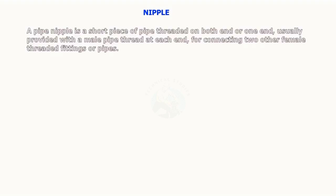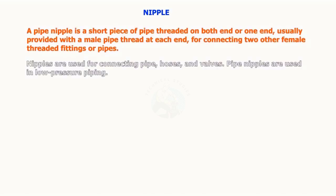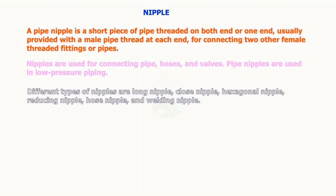A pipe nipple is a short piece of pipe threaded on both ends, or one end, usually provided with a male pipe thread at each end for connecting to other female-threaded fittings or pipes. Nipples are used for connecting pipes, hoses, and valves, and are used in low-pressure piping. Different types of nipples are: long nipple, close nipple, hexagonal nipple, reducing nipple, hose nipple, and welding nipple.